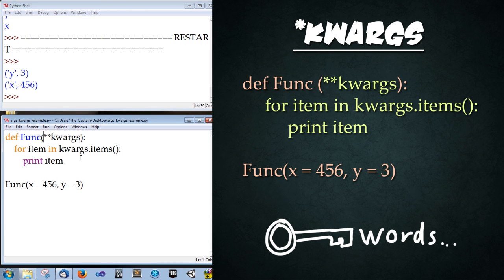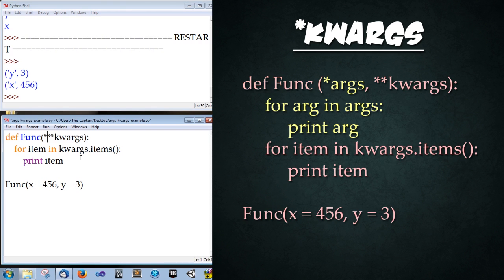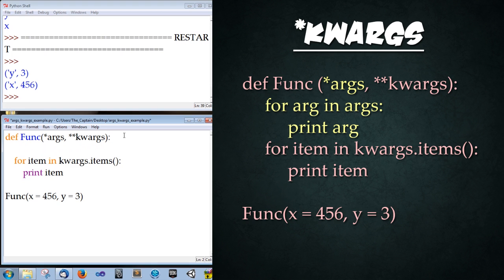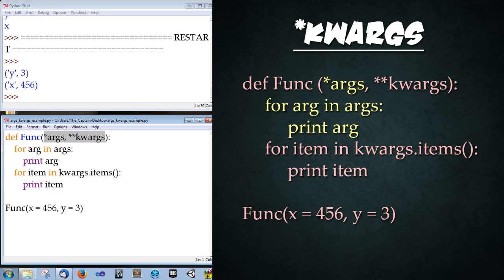So now let's combine both features into a single function. Right ahead of kwargs we're going to type *args, and then after that we're going to insert a for loop for the args again. for arg in args: print arg. Save that. And now with these two special arguments we can pass in an unlimited number of keyword arguments and regular arguments. Keep in mind though that you must keep them in order. The arguments must come first and the keyword arguments must come after.